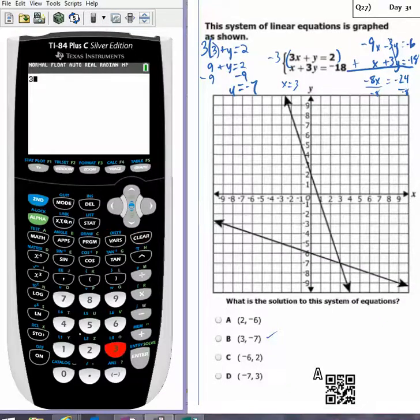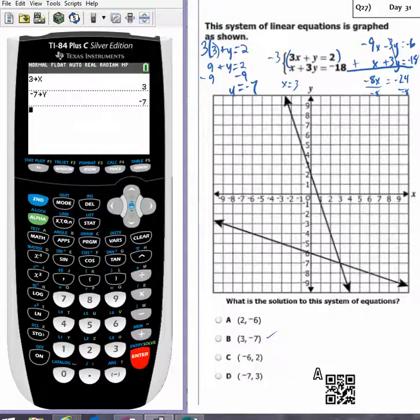So I'm going to go to my calculator, 3 store x enter, negative 7 store y enter, and now I'm just going to type in both equations and they should be true.